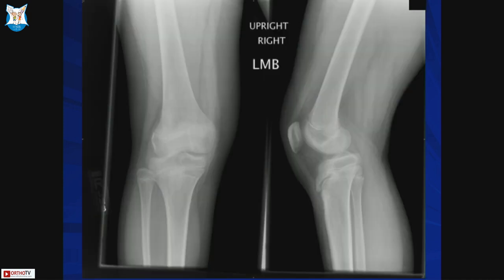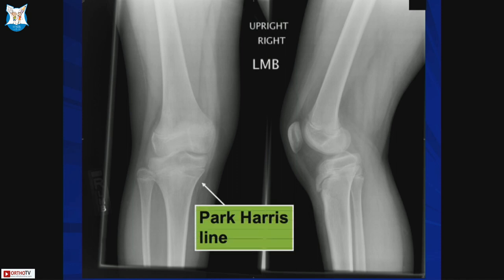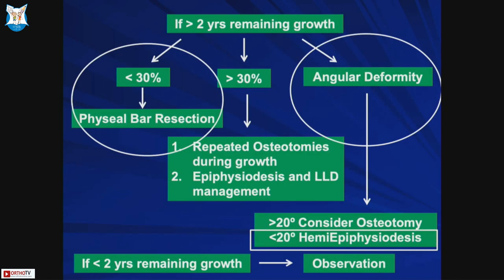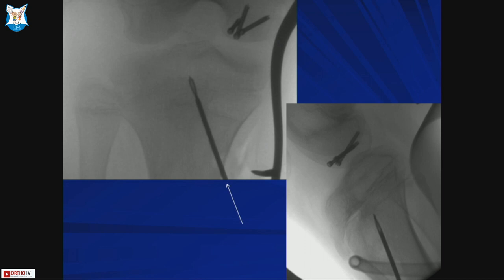Here is a case of a 12-year-old male with an ATV accident and flexion-type deformity. You can see reversal of the tibial slope - normal tibial slope is posterior about 8 to 10 degrees, but here there is anterior tilt of about 10 degrees, a reversal. This is a central bar and it's post-traumatic, making it ideal for resection especially since it is less than 30%. Per the algorithm, the patient has angular deformity and less than 30% bar, so both hemi-epiphysiodesis and physeal bar resection were performed.